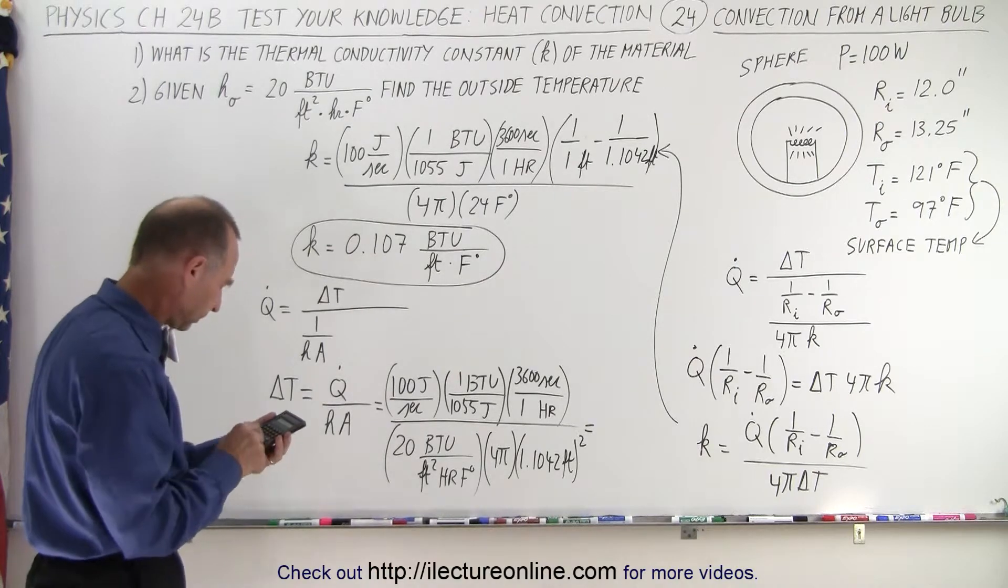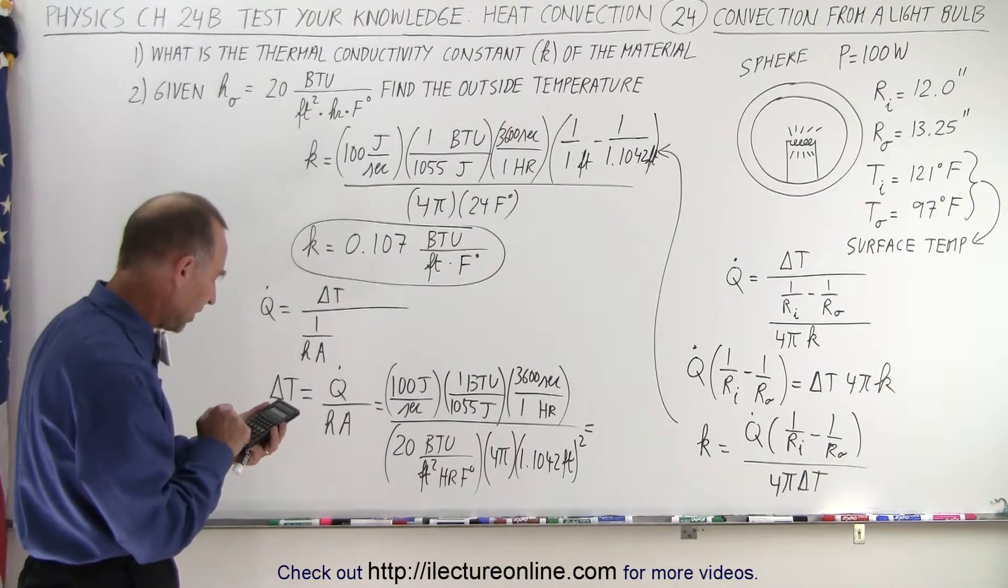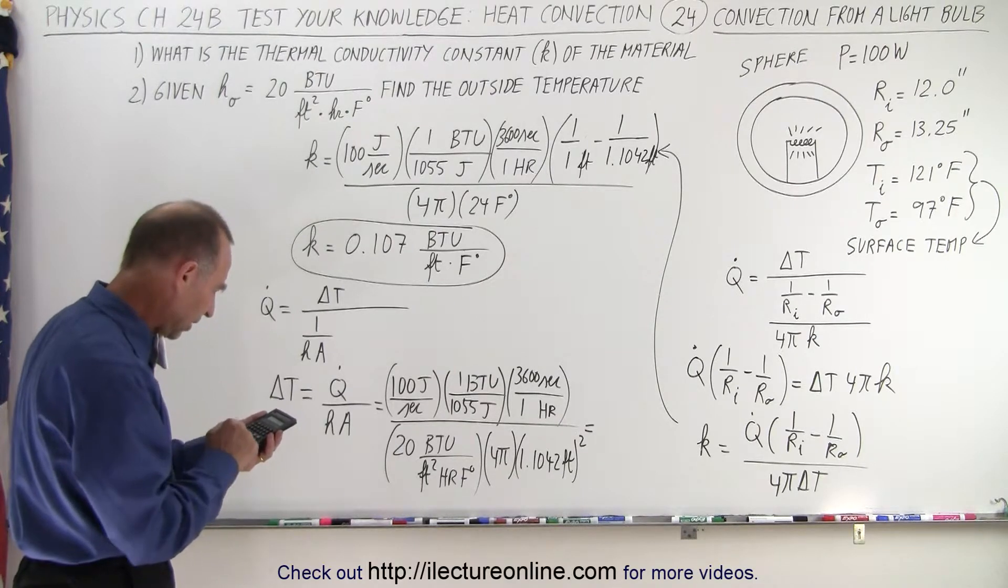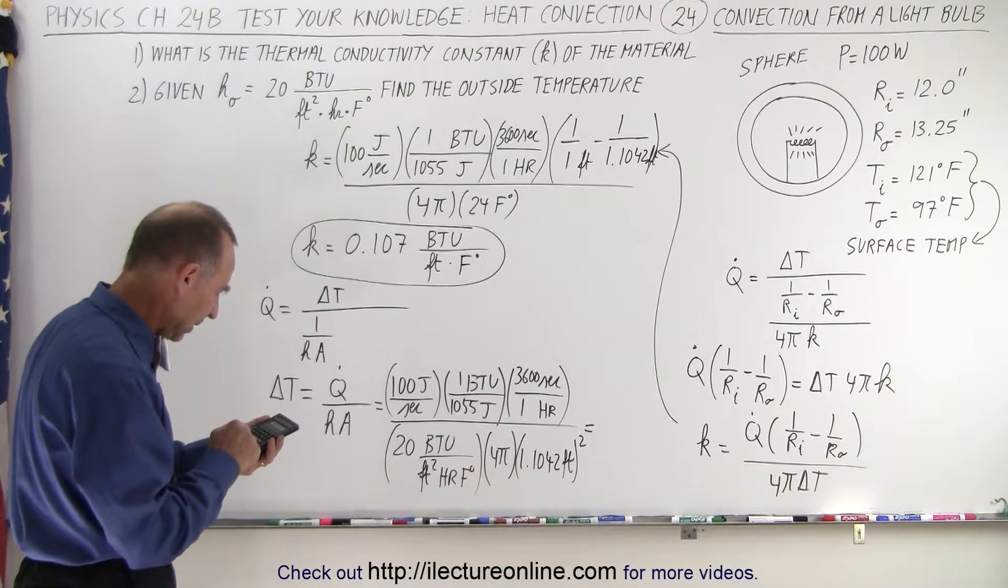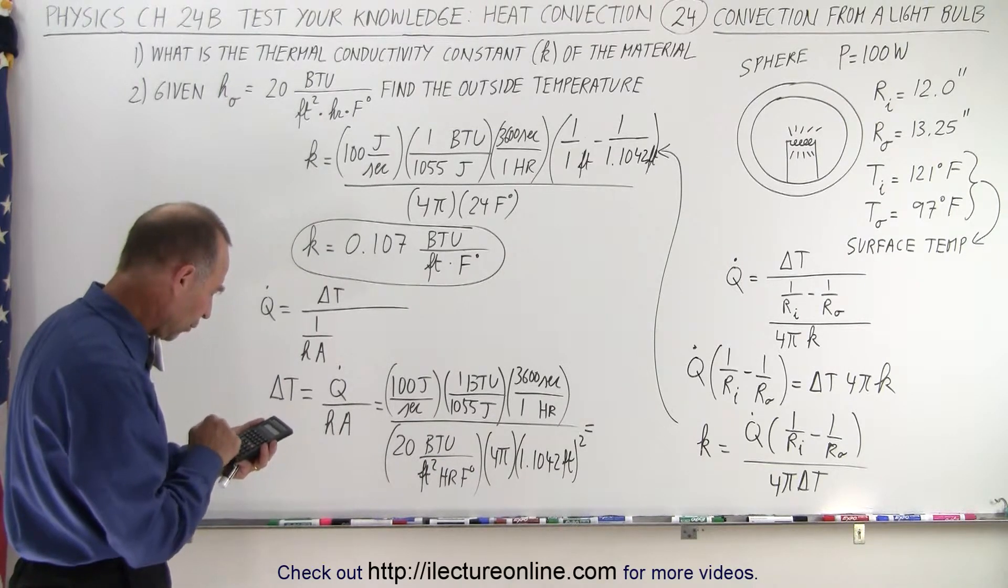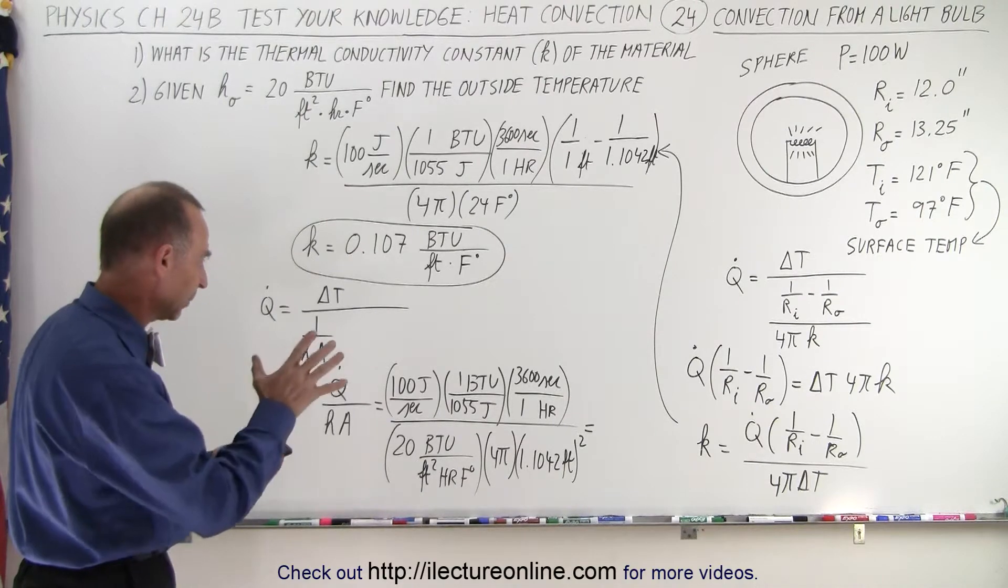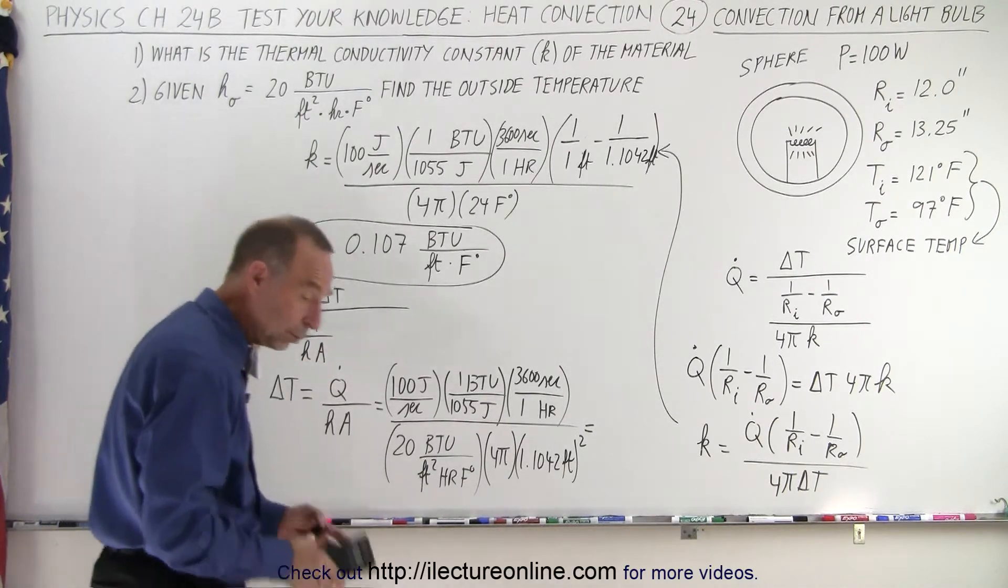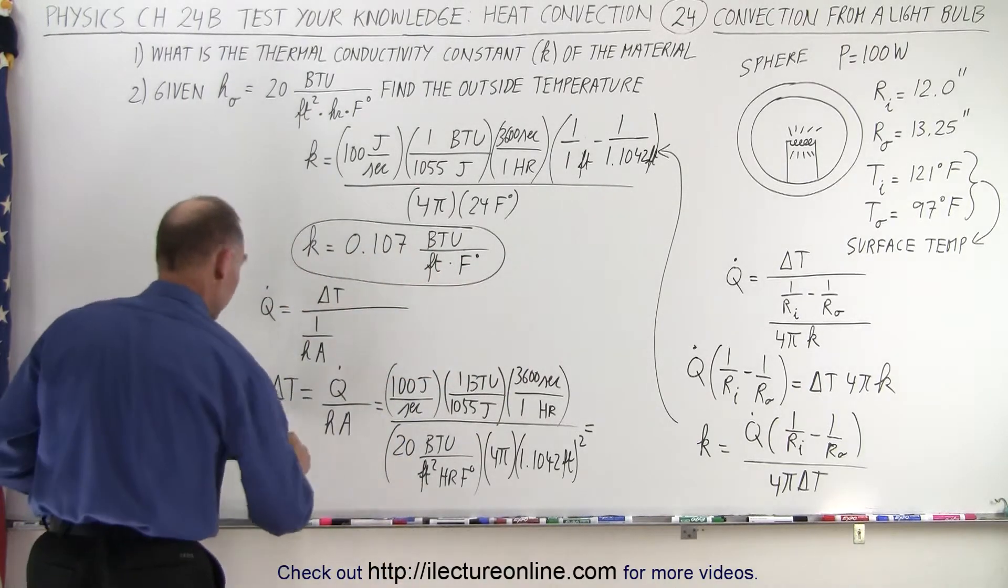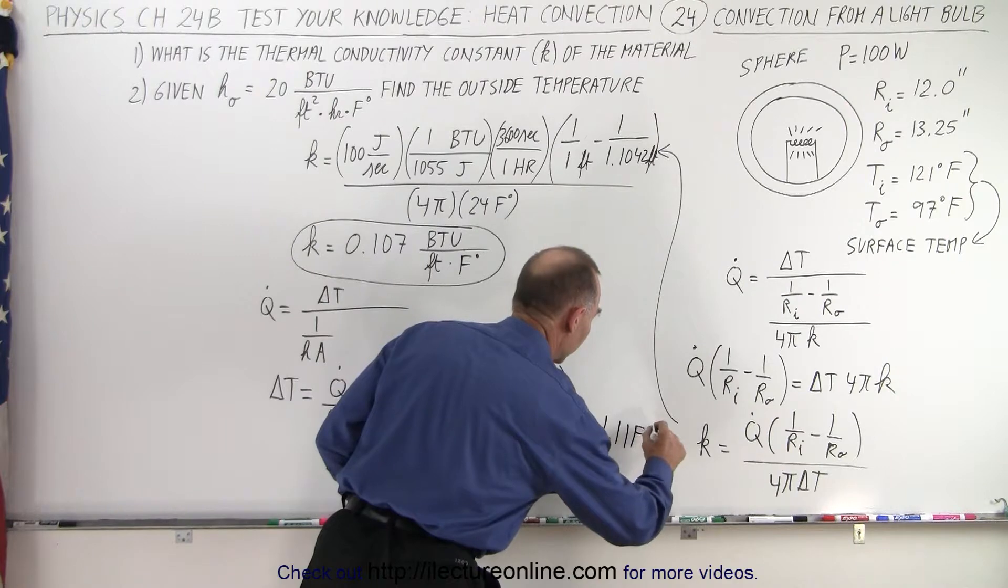All right, let's see what we get. 100 divided by 1055 times 3600, divide by 20, divide by 4, divide by pi, and divide by 1.1042 squared, yes, because you have to have the radius squared, equals, and we get 1.11 degrees. So, let's see here, so 1.11 Fahrenheit degrees.